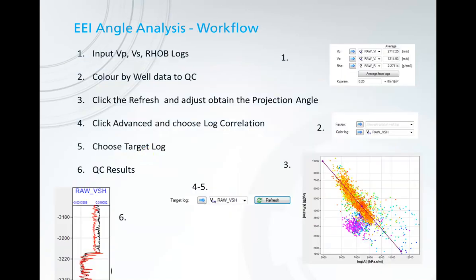The process works by inputting a VP, VS, and Rho log, and then adding some additional well data like a V-shale or a gamma ray to QC the data on the plot. We then do a first-pass estimation of the projection angle on this scatter plot. We can then choose an advanced option to find the peak correlation with a specific log, such as V-shale or gamma ray, and QC the results in a number of different ways.